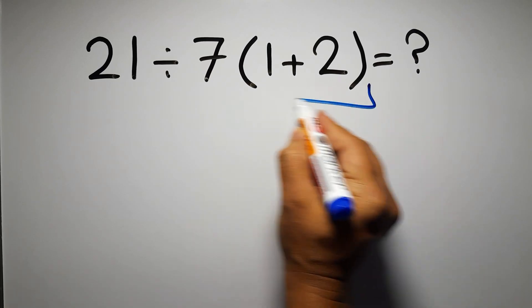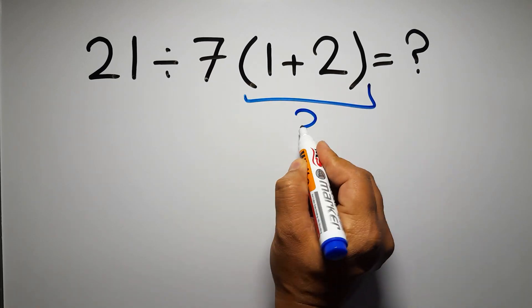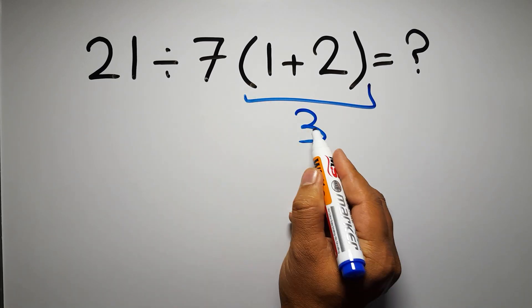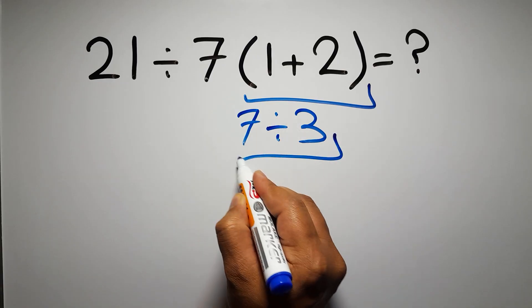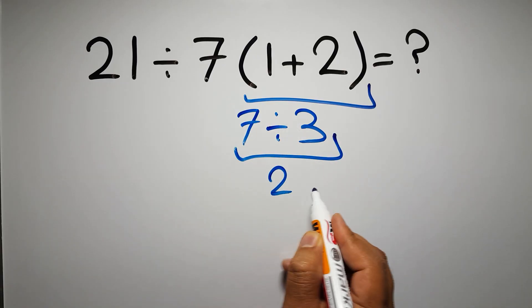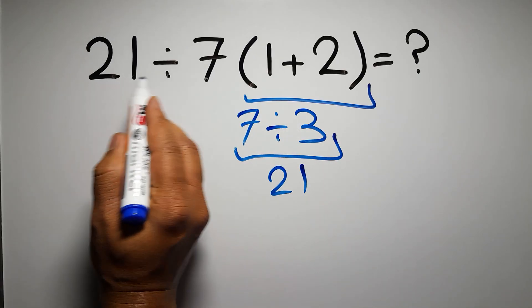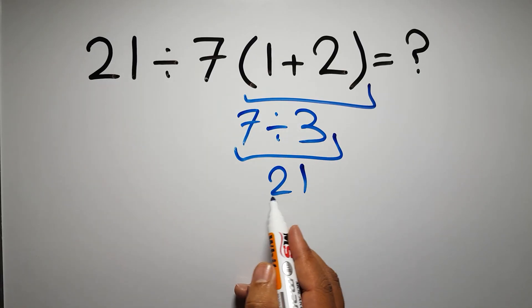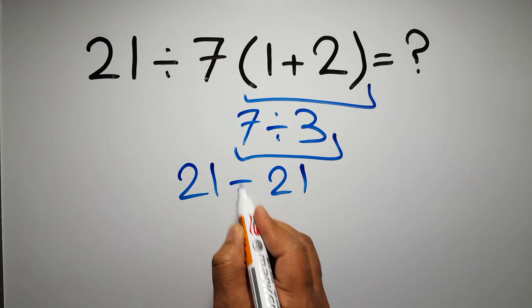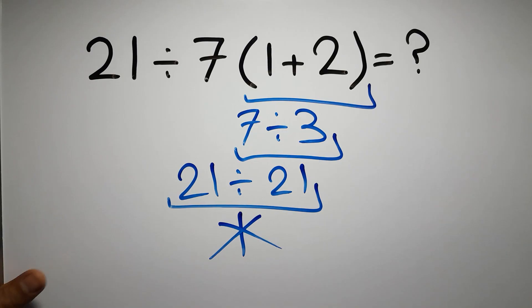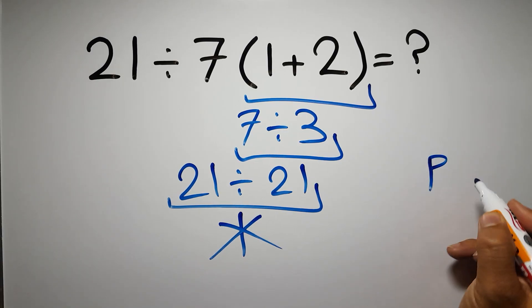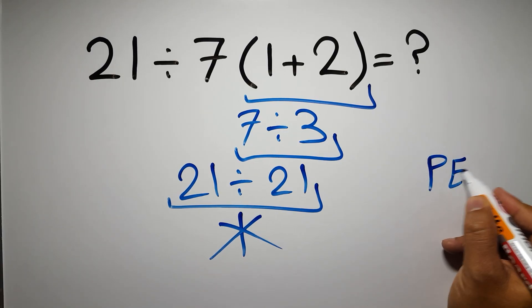1 plus 2 gives us 3, and 7 times 3 equals 21, so 21 divided by 21 equals 1. But this answer is not correct, because according to the order of operations, first we have to do parentheses, then exponents.